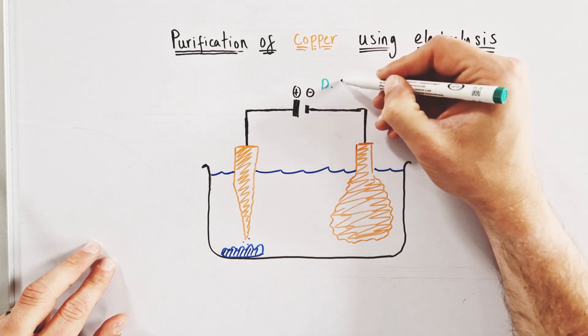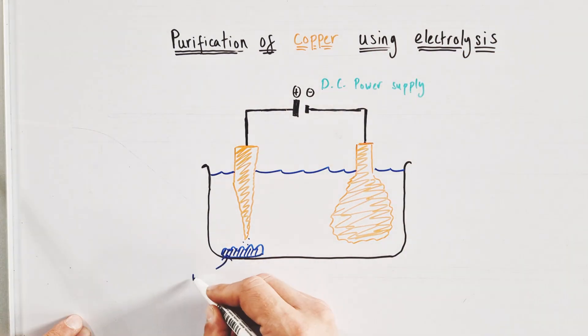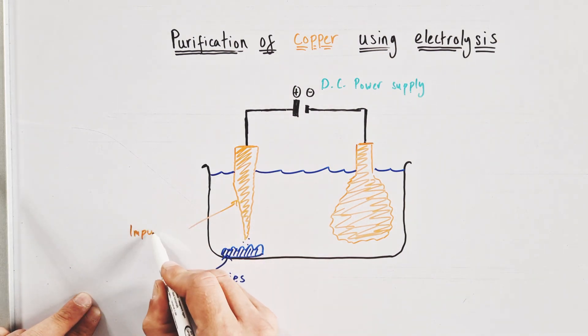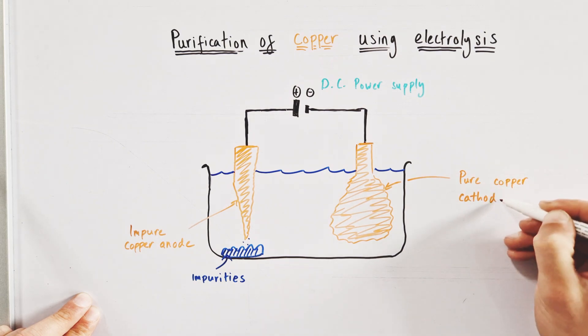When we turn the power supply on and the current is allowed to flow, we'll notice that the left-hand electrode, the positive anode, will begin to appear to wear away and impurities will fall to the base of the beaker, whilst the right-hand electrode, the negative cathode, will appear to grow in size as it builds up copper on its surface.